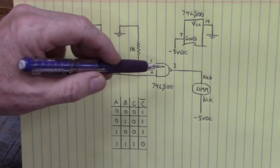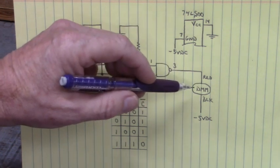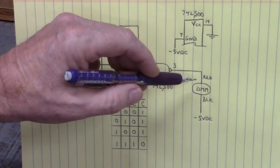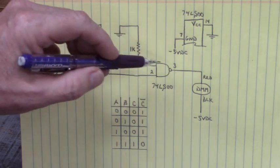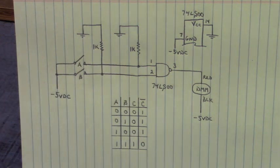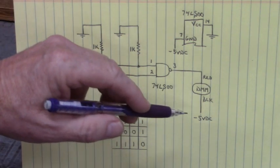Now the output is going to our digital multimeter. The red lead is going to pin three and the black lead is going to negative five volts DC.